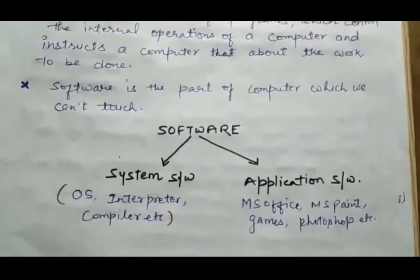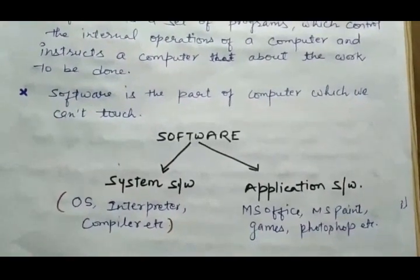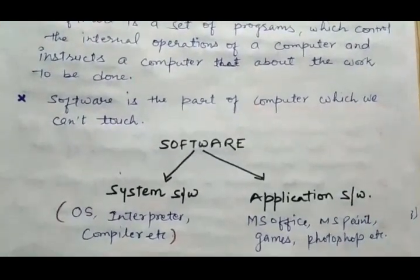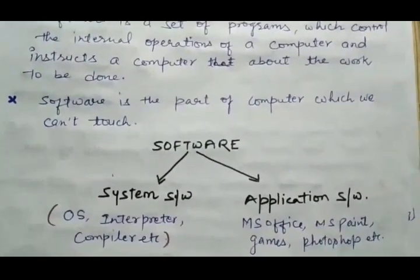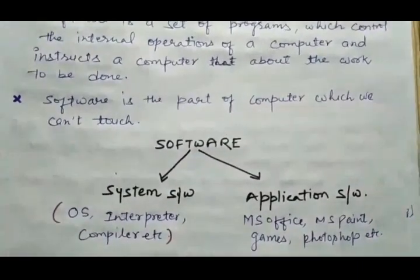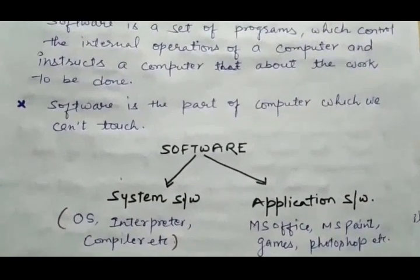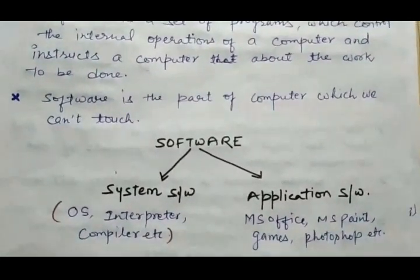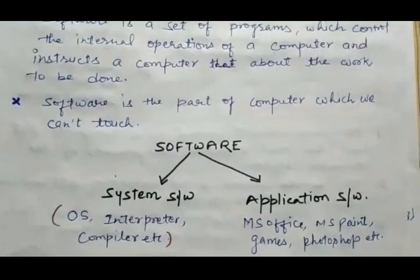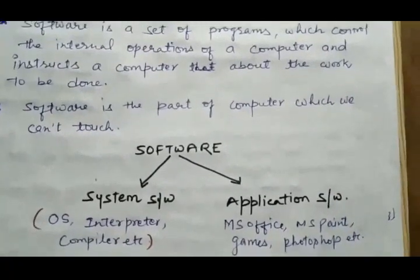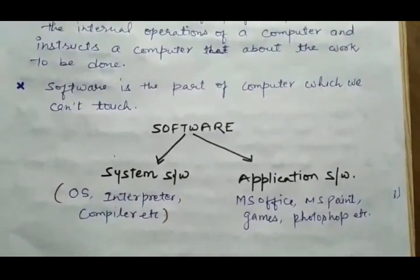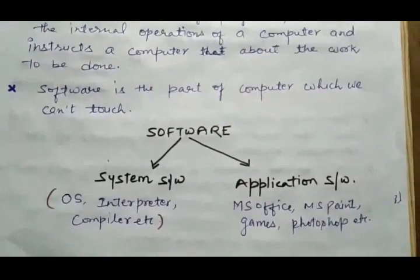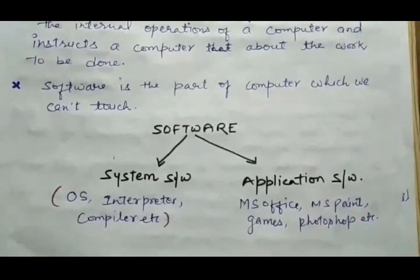Computer software is divided into two categories: system software and application software. The most important is system software because without system software we cannot use any application software, nor can we use the computer. The most important system software is the operating system, which controls all activities of a computer. For example, just like a car cannot move without a driver, if the operating system is not present the computer is useless — like an empty box.